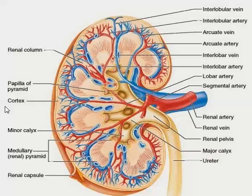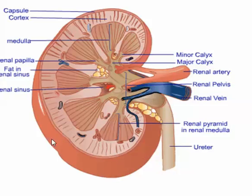Here we have the cortex, which is the outer part of the kidney. Now try to find the medulla. Here we can clearly see the medulla. Can you see the pyramids? Here are the renal pyramids in the renal medulla.